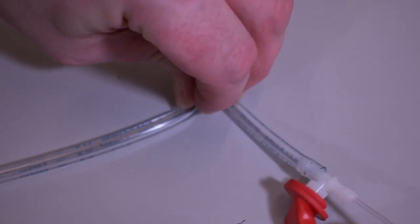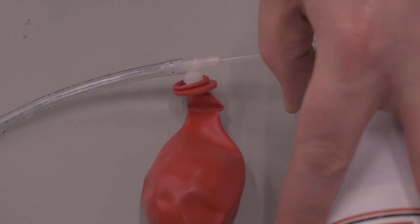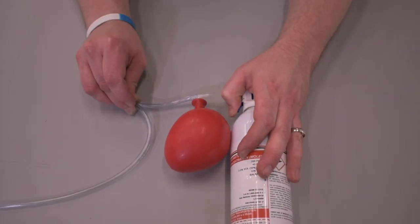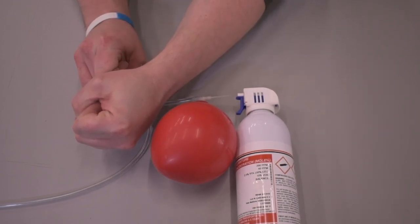Fold and pinch the line between the balloon and the monitor to stop the flow of gas. Squeeze the trigger until the balloon fills up roughly to the size of your fist. Release the trigger, then release the kink in the line.